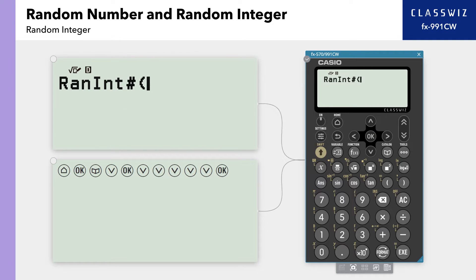In this example, we want to generate a random integer between 1 and 100. Enter the start value 1, comma, end number 100 and closing parenthesis.